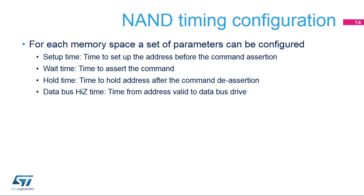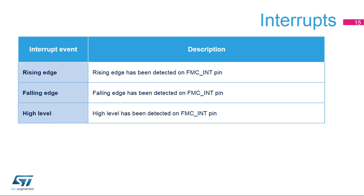Four parameters are used to define the number of HCLK cycles for the different phases of any NAND flash access. The NAND controller offers three interrupt sources: rising edge, falling edge, and high-level detection on the FSMC INT pin when it is connected to the ready-busy signal from the NAND flash memory.